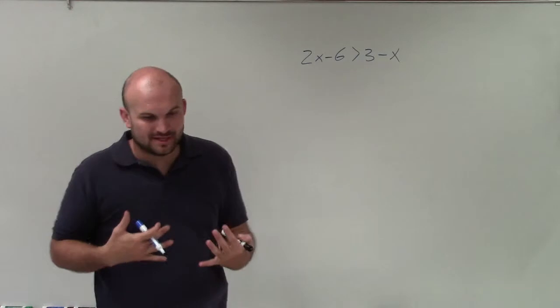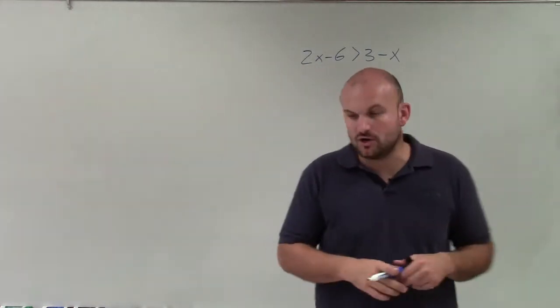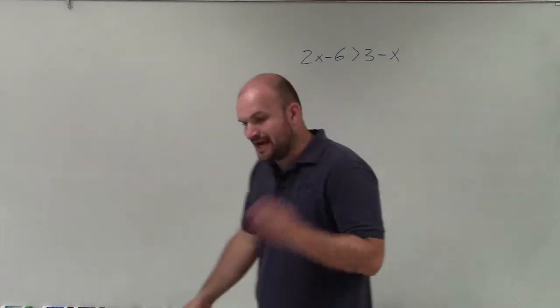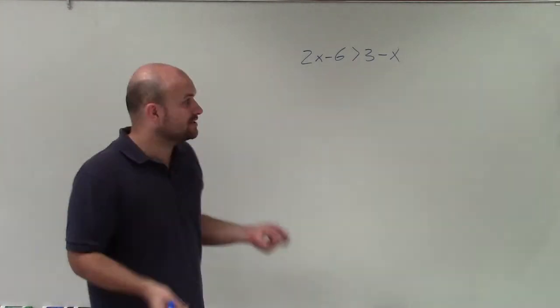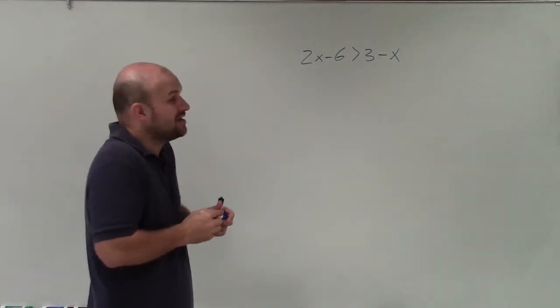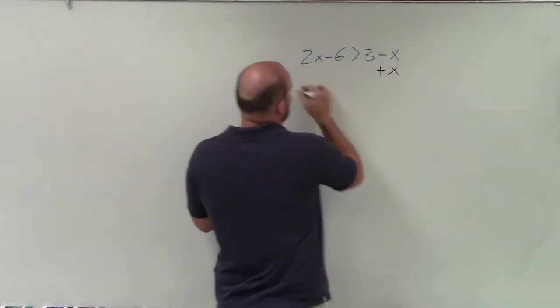So basically, what we're going to do is work on solving this just like we have an equation, but then we're just going to graph the solution. When I'm solving an inequality when I have a variable on both sides, the first thing I want to do is get the variable to the same side. So I can see I have a 2x and I have a negative x. And usually I always like to get the variables so they're positive. So I'm going to add an x onto both sides.